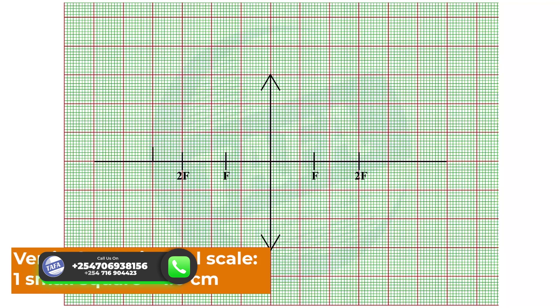At 40 small squares from the lens towards the left side of the lens.